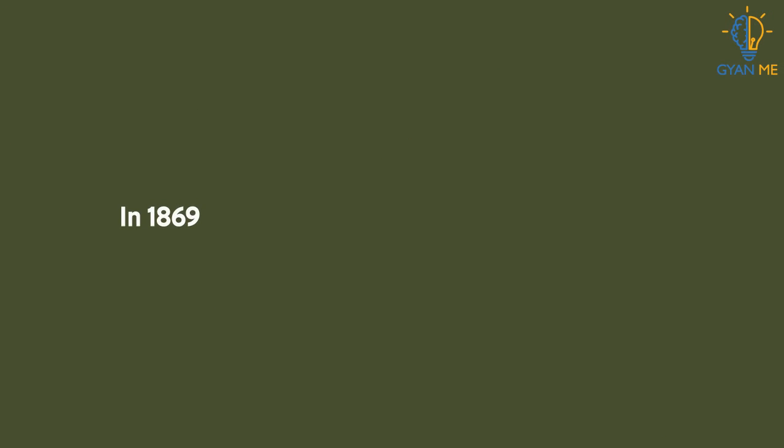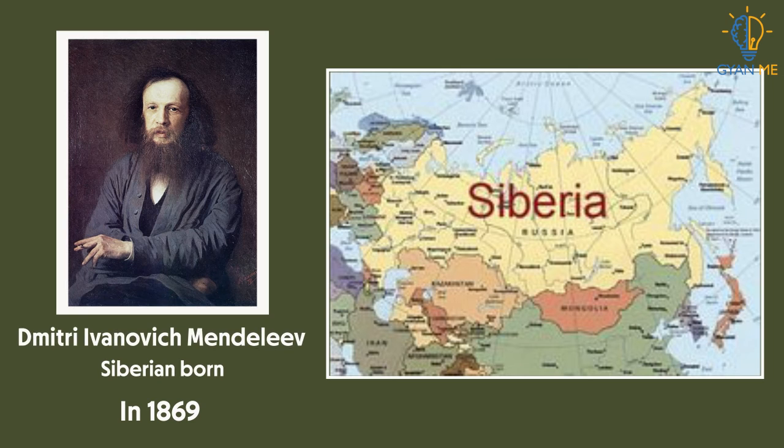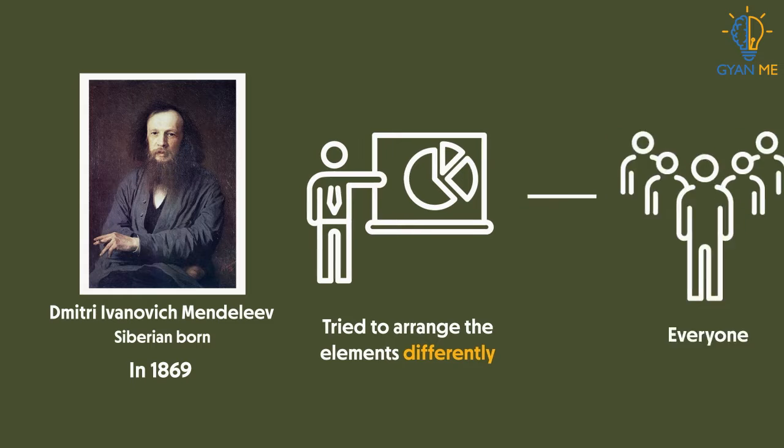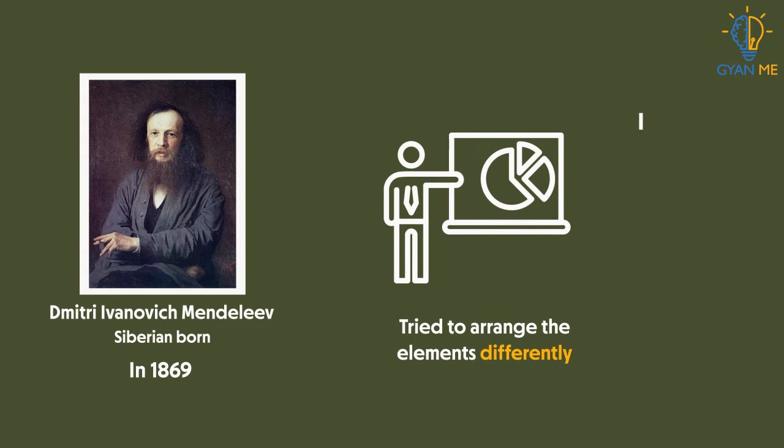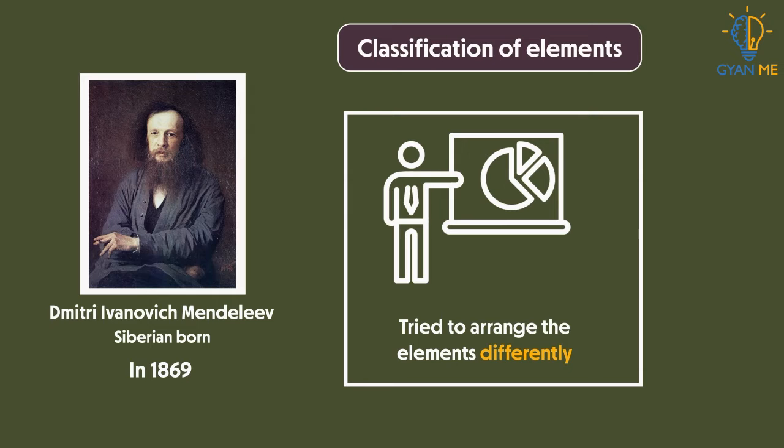In 1869, the Siberian-born Dmitry Ivanovich Mendeleev tried to arrange the elements differently than everyone. And this idea proved to be very important in the history of the classification of elements.